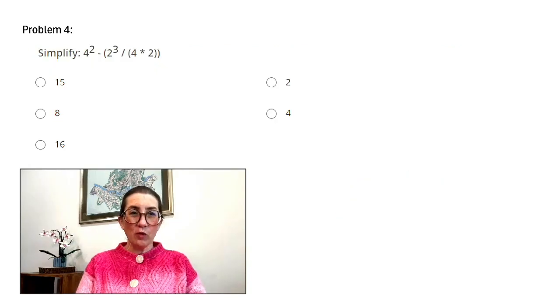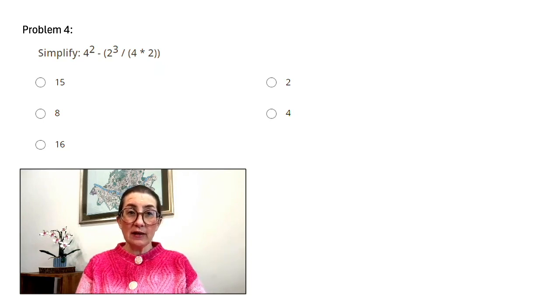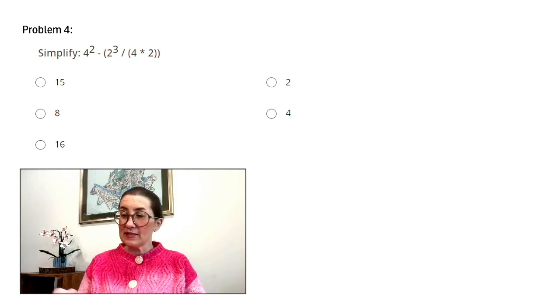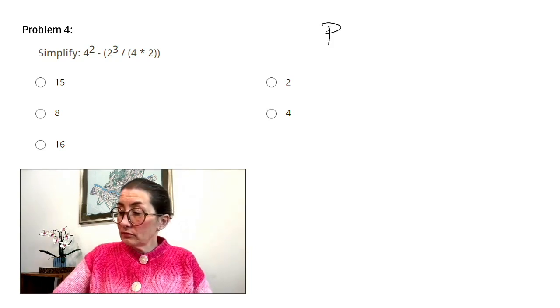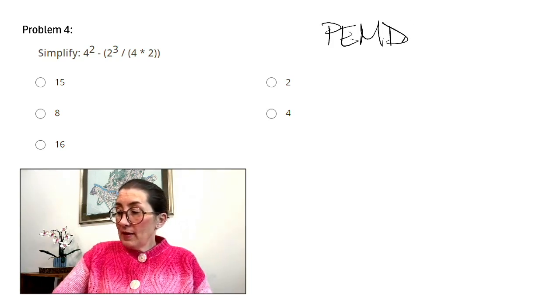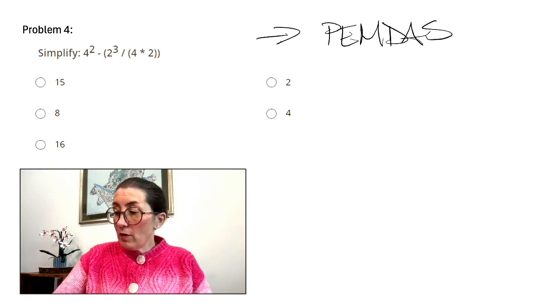Problem number four. Simplify 4 squared minus, in parentheses, 2 cubed divided by, in parentheses, 4 times 2 close parentheses. To get started, let's review PEMDAS.